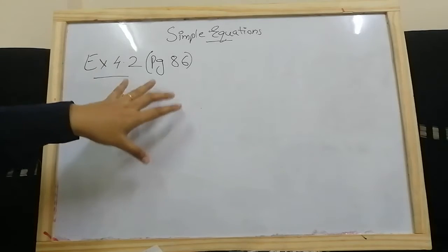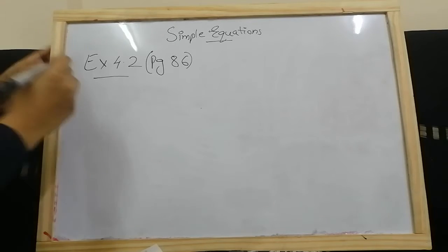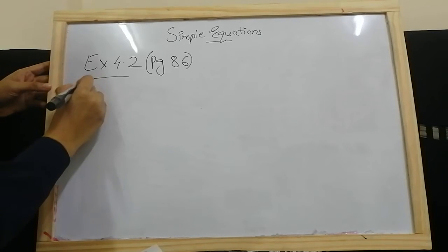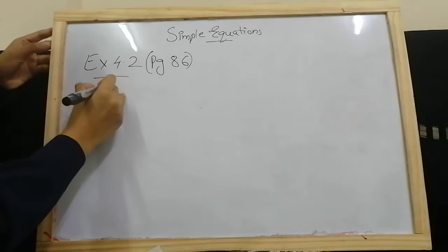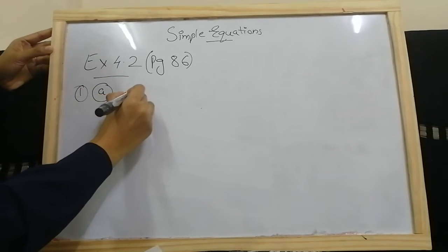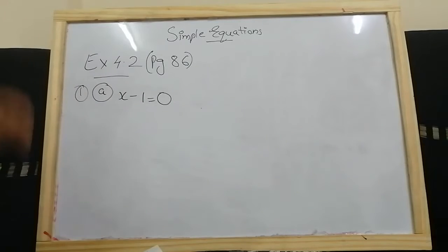Now we are going to start with Part 2, that is Exercise 4.2, which will be on page 86 in your textbook. The first question says: give first the step you will use to separate the variable, and then solve the equation. The first sub-question is x minus 1 is equal to 0.